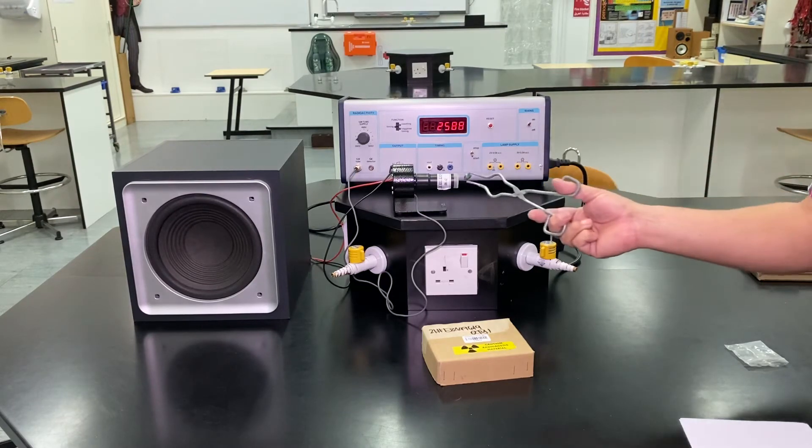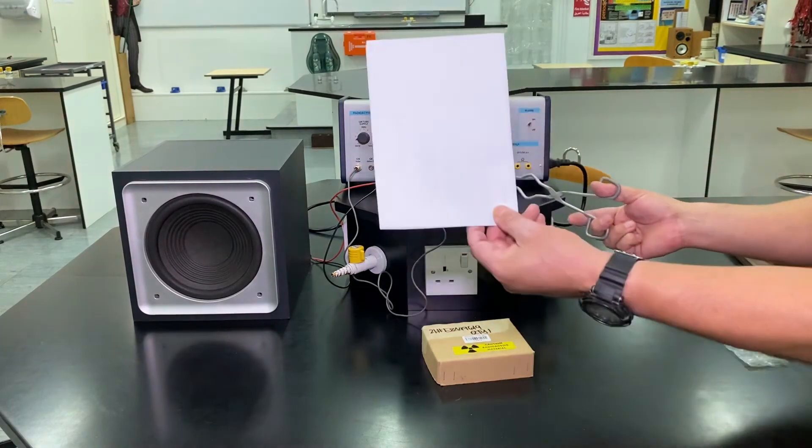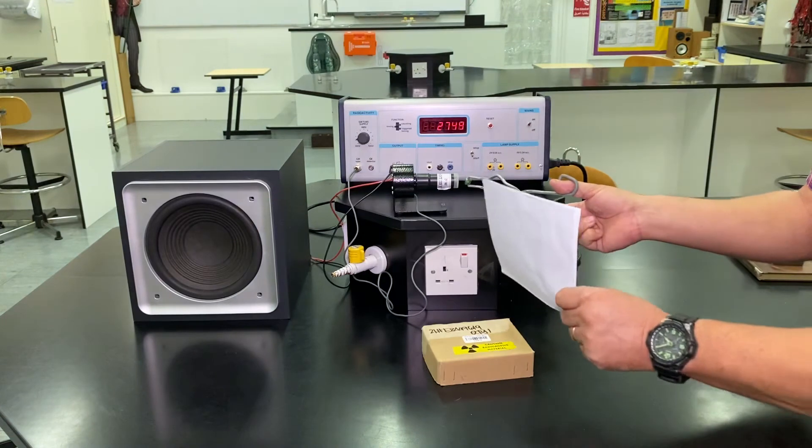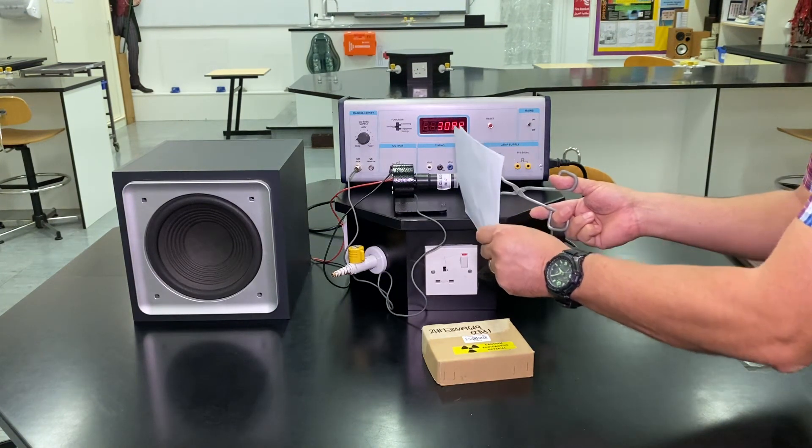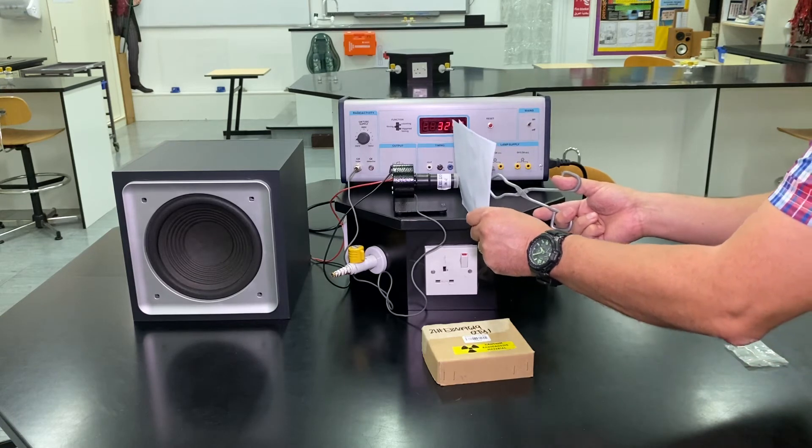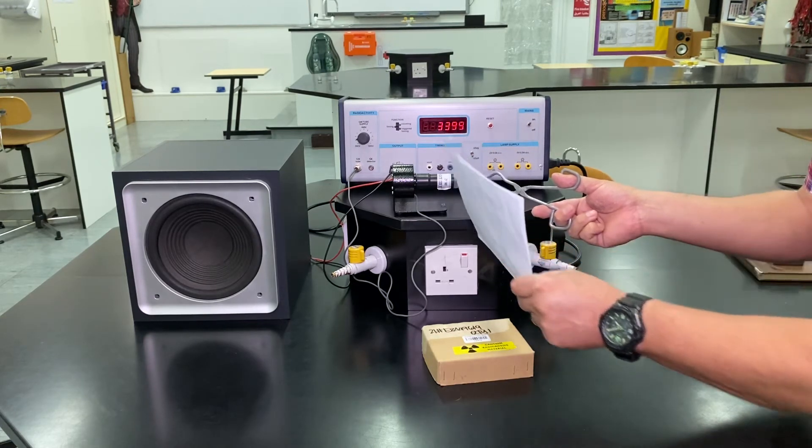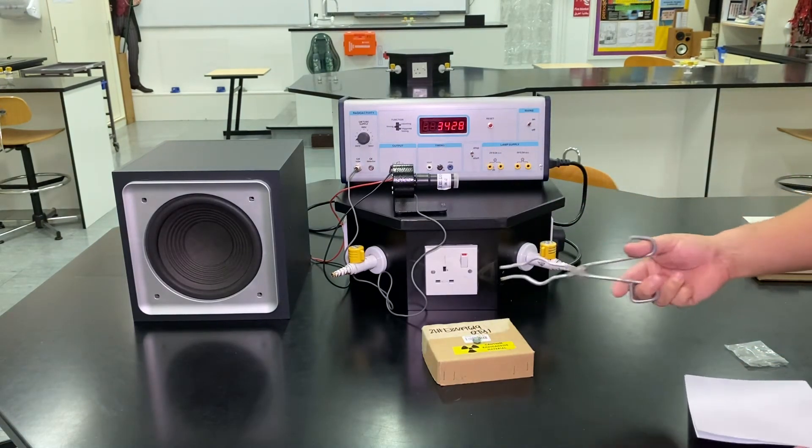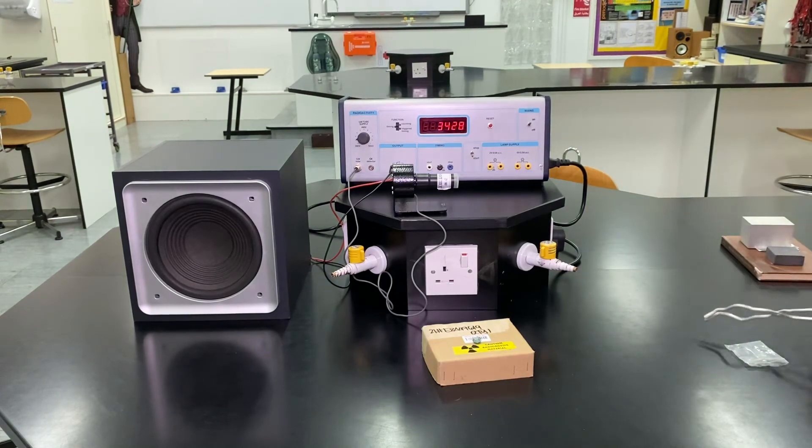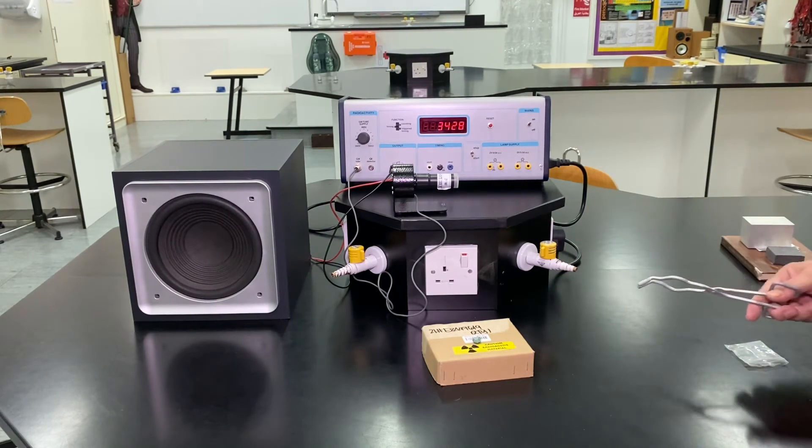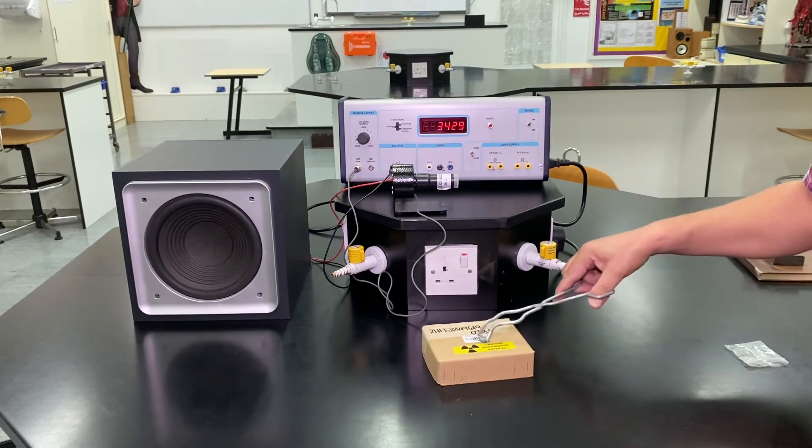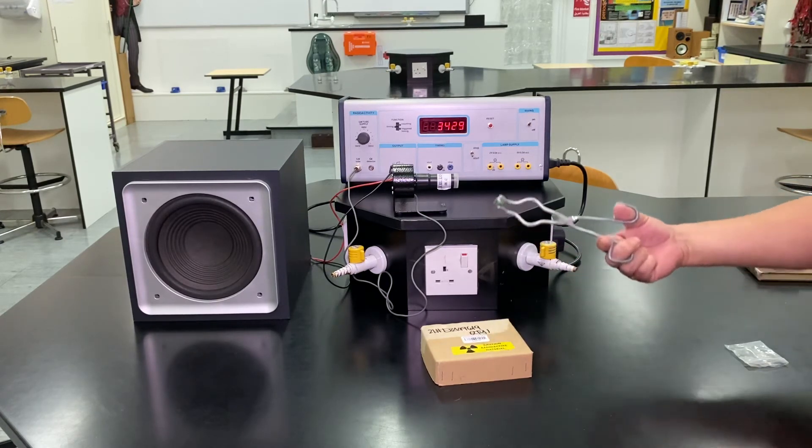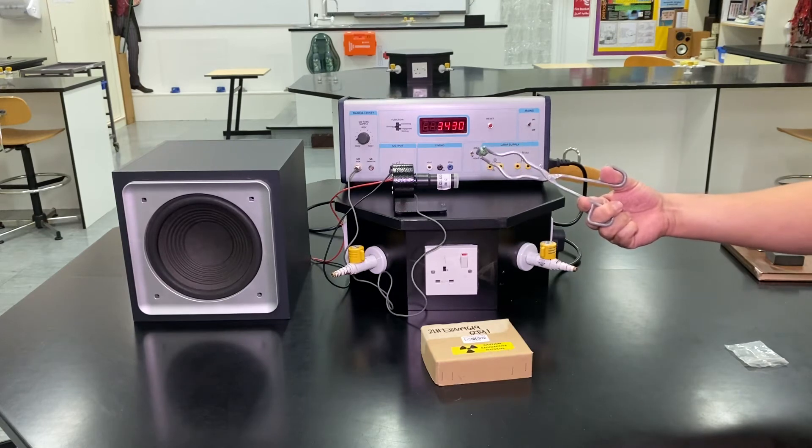Let's see what effect, if any, a couple of sheets of paper does. No effect. If there's no effect from a couple of sheets of paper, I think we can safely assume there's no alpha, no alpha radiation being given off from this sample of radioactive rock.